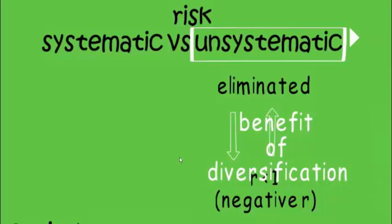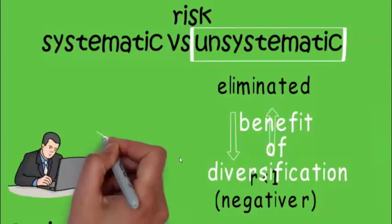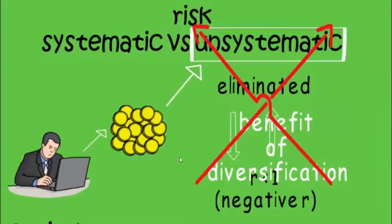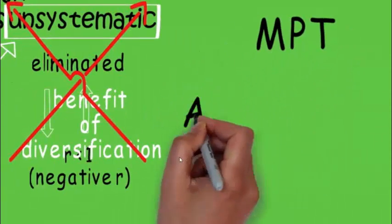This concept was introduced in Modern Portfolio Theory given by Harry Markowitz in 1952. Since unsystematic risk can be eliminated, it is no longer of concern for any investor. What we are concerned about is the systematic risk, also known as market risk.